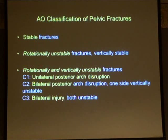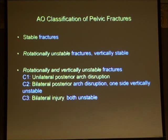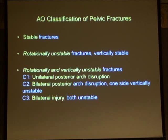Moving on to the AO classification — it looks very similar to the Tile classification, categorizing fractures into stable, rotationally unstable, or both rotationally and vertically unstable, placing fractures into similar categories as the Tile classification.